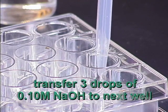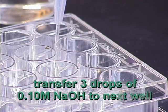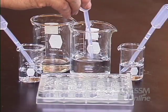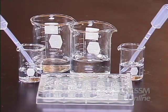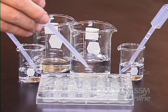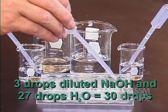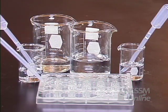Transfer 3 drops of that solution to the next well. Rinse the pipette, then add 27 drops of water and mix. Continue that procedure until you've filled all the wells in that row. This should take you from pH of 13 down to pH of 8.